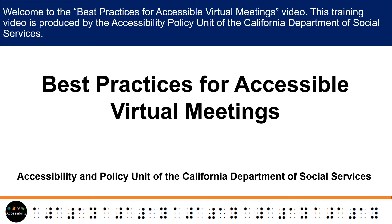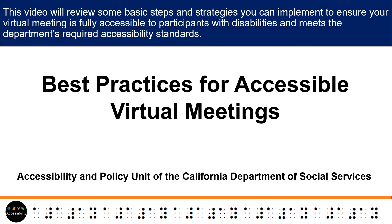Welcome to the Best Practices for Accessible Virtual Meetings video. This training video is produced by the Accessibility Policy Unit of the California Department of Social Services. This video will review some basic steps and strategies you can implement to ensure your virtual meeting is fully accessible to participants with disabilities and meets the department's required accessibility standards.